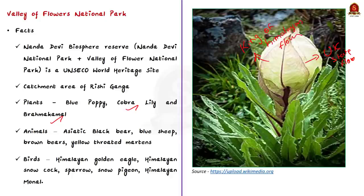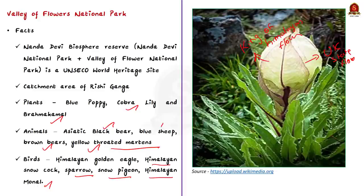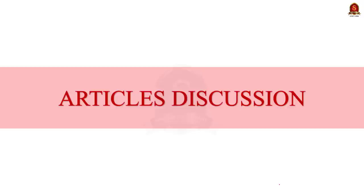The valley is home to a diverse range of wildlife including Asiatic black bears, blue sheep, brown bears, and yellow-throated martens. The Himalayan golden eagle, Himalayan snowcock, snow pigeon and Himalayan monal are among the birds found in this national park. That's all regarding this discussion. With this, let us conclude the previous year question discussion and take up the articles we are going to discuss today.